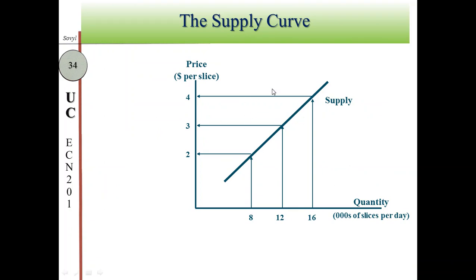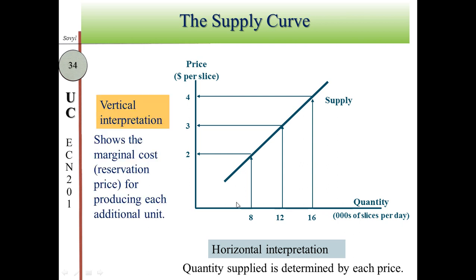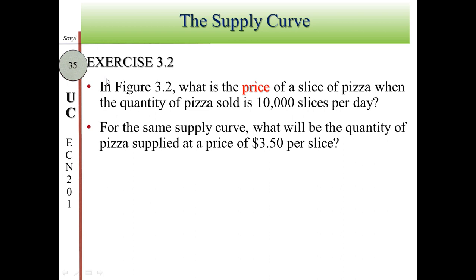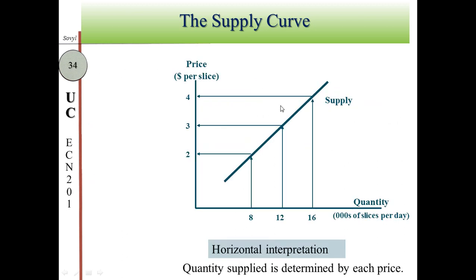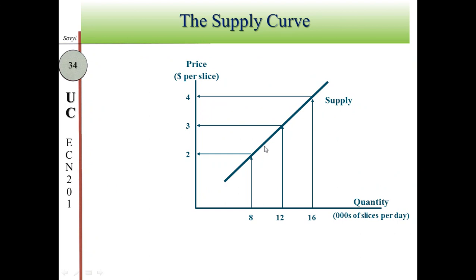If you have a supply curve, you can also use two methods to interpret it: horizontal interpretation (starting from quantity to the curve and then to price) or vertical interpretation (starting from price to the curve and then to quantity). Exercise 3.2 uses figure 3.2, the supply curve for pizza. The two graphs shown represent the same supply curve.